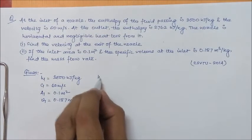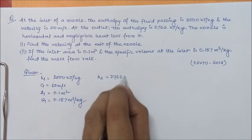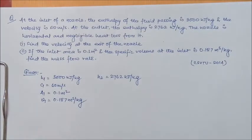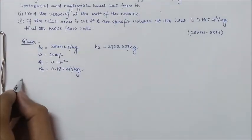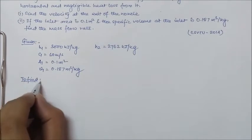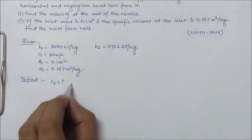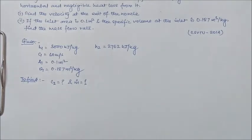At the outlet, we have H2 as 2762 kJ per kg. Okay. So, we got this. Now, to find, we want to find C2 and mass flow rate. Mass flow rate is kg per second. Right?